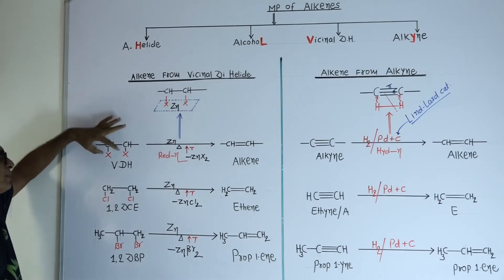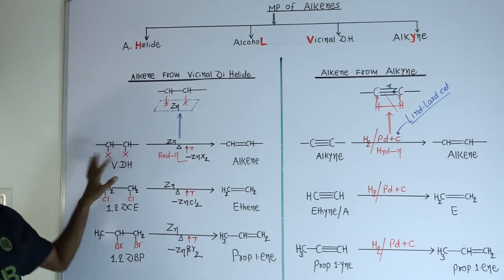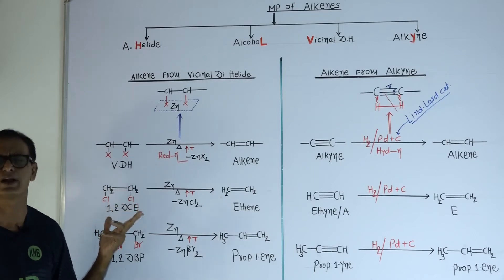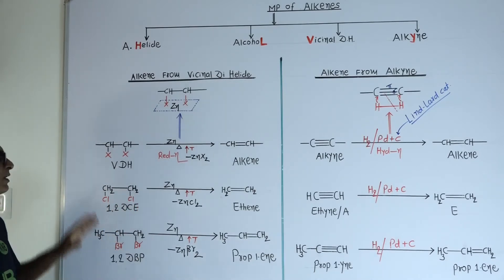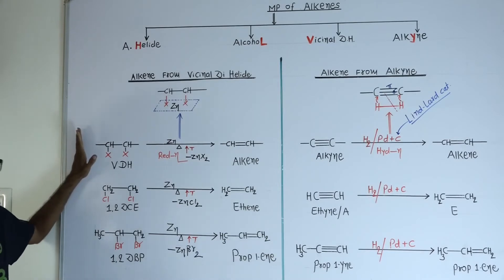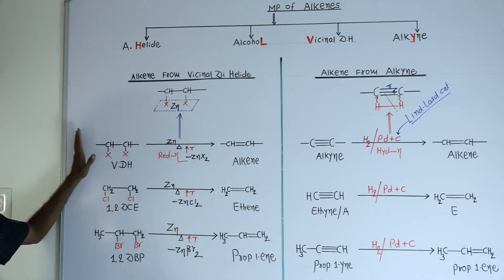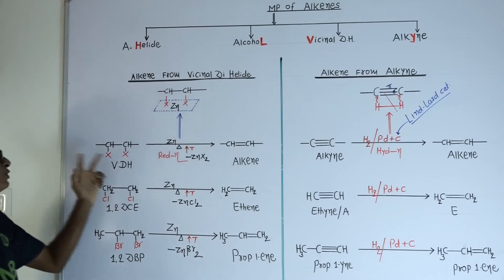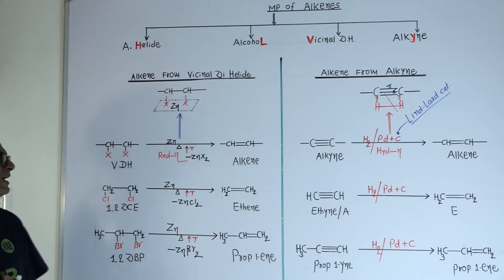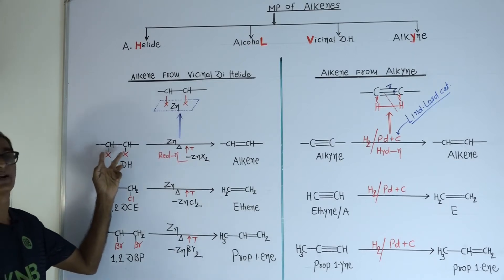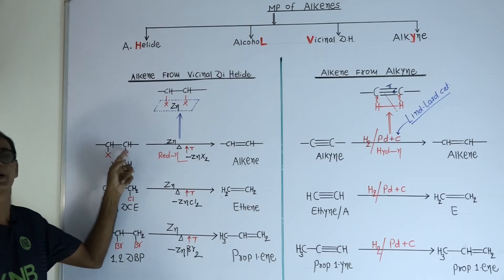This is the general formula of vicinal dihalide. The compound is also known as a dihalide, where X symbolizes the halogen. X may be equal to chlorine, bromine, or iodine. When vicinal dihalide is heated with zinc metal at higher temperature, both halogen atoms are removed from the vicinal dihalide, and after removal of both halogens, one valency of both carbon atoms will decrease.